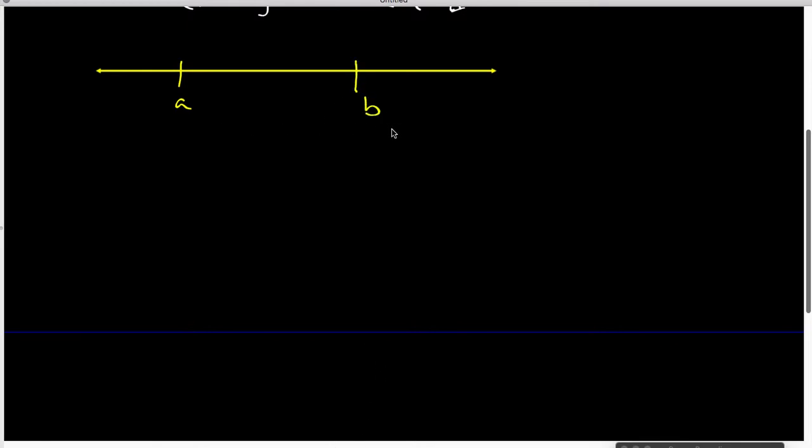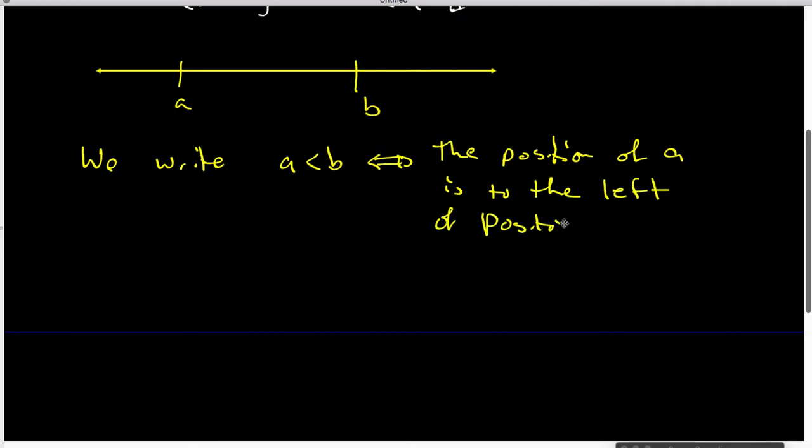And when A and B are like this, we are going to write A is less than B. So A is less than B means the position of A is to the left of the position of B on the number line.